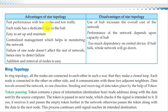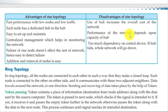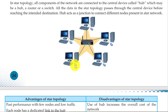Advantages of star topology: fast performance with few nodes and lower traffic. Each node has a dedicated link to the hub, so the data transfer rate is very high and the data is very secure. Failure of one node doesn't affect the rest of the network, making it easy to detect failure.